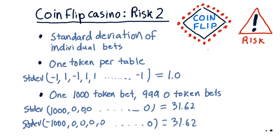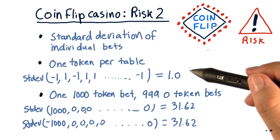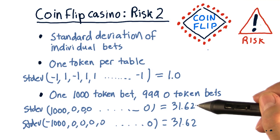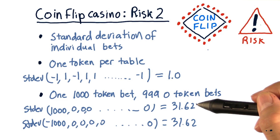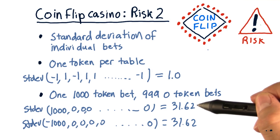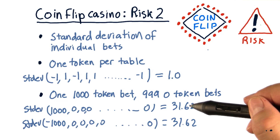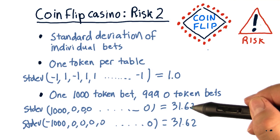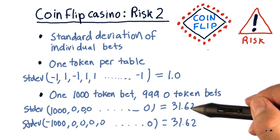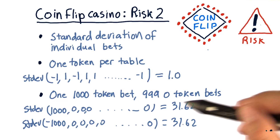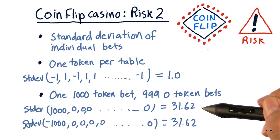Key point here is standard deviation, or risk, is much, much larger — about 31 times larger when we make that single bet on one table and no bets on the other tables.